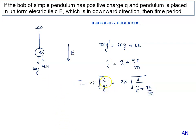Previously the time period was 2π root L by g. Now the time period has become 2π root L upon g plus Qe by m. So obviously you can see the time period will decrease.